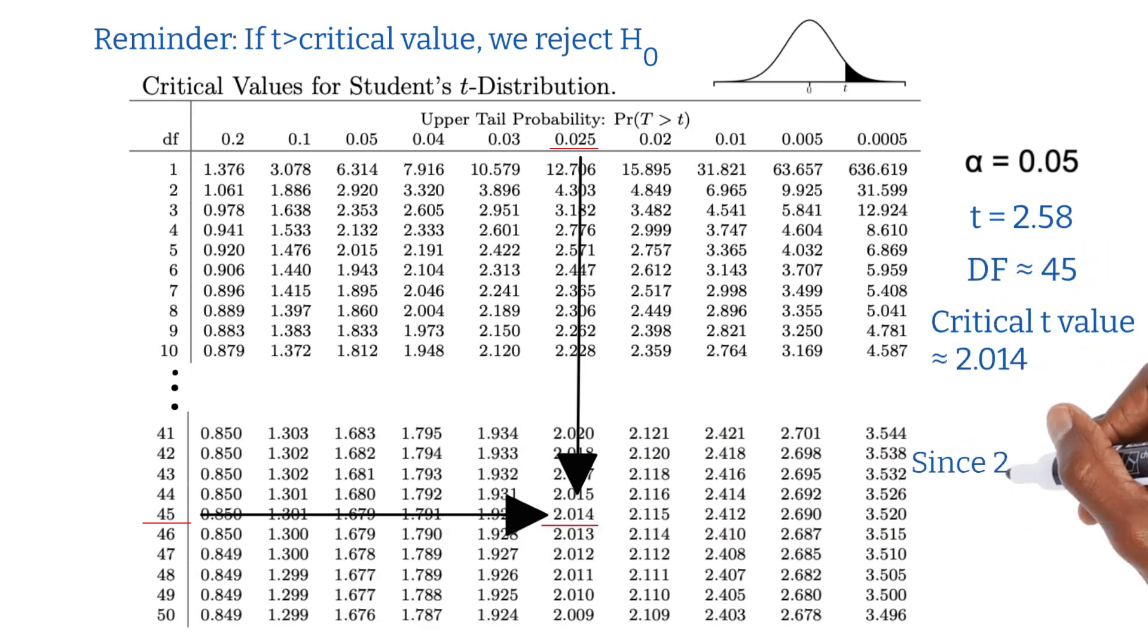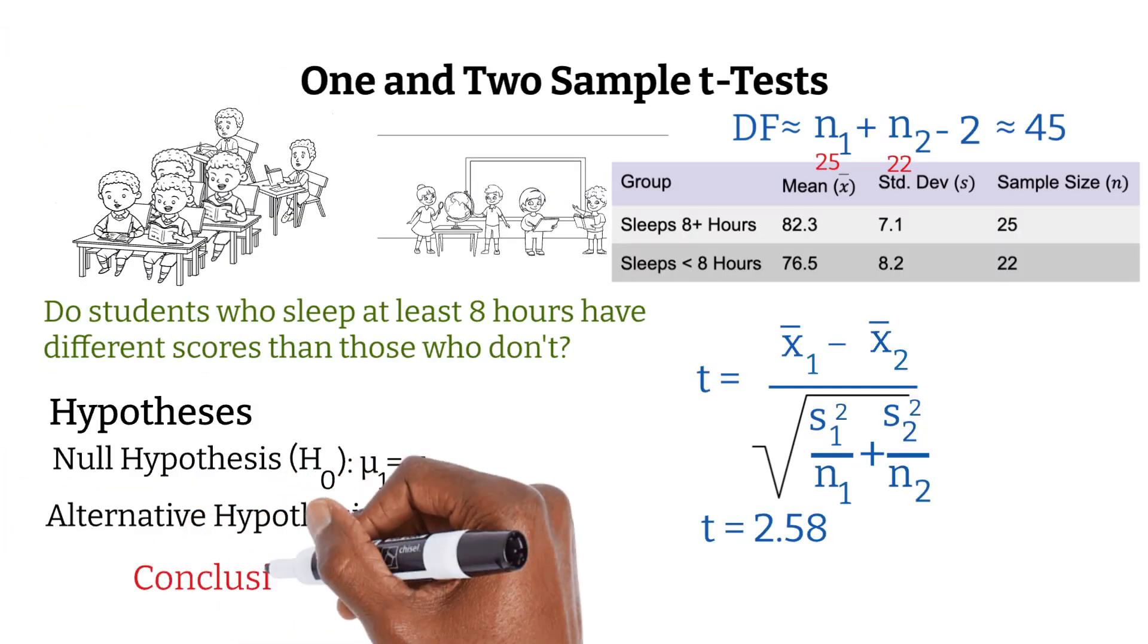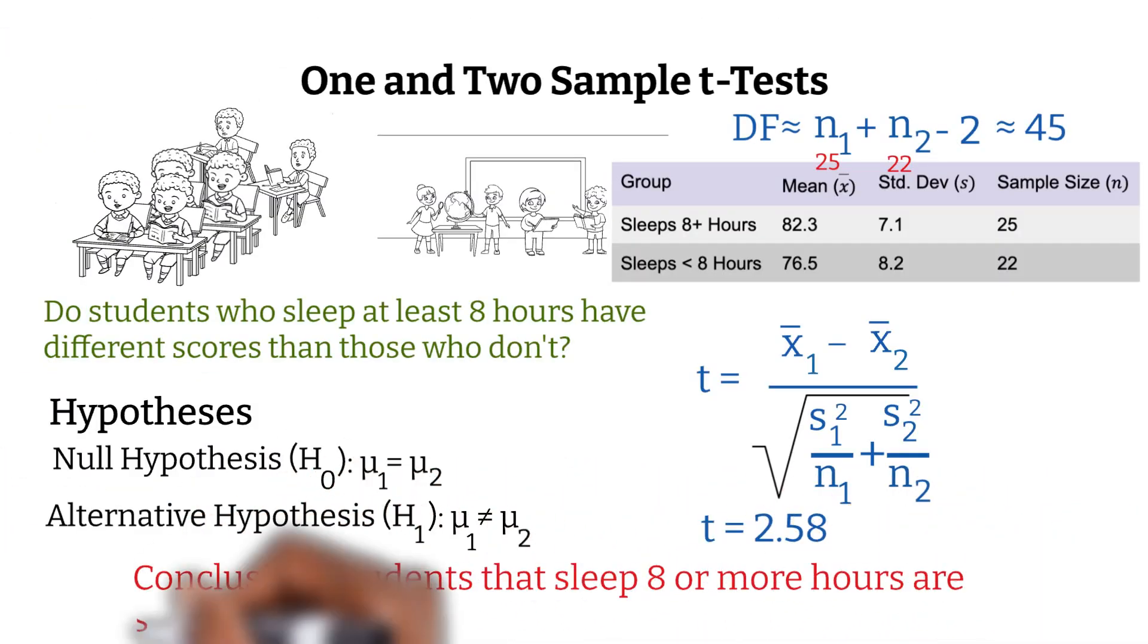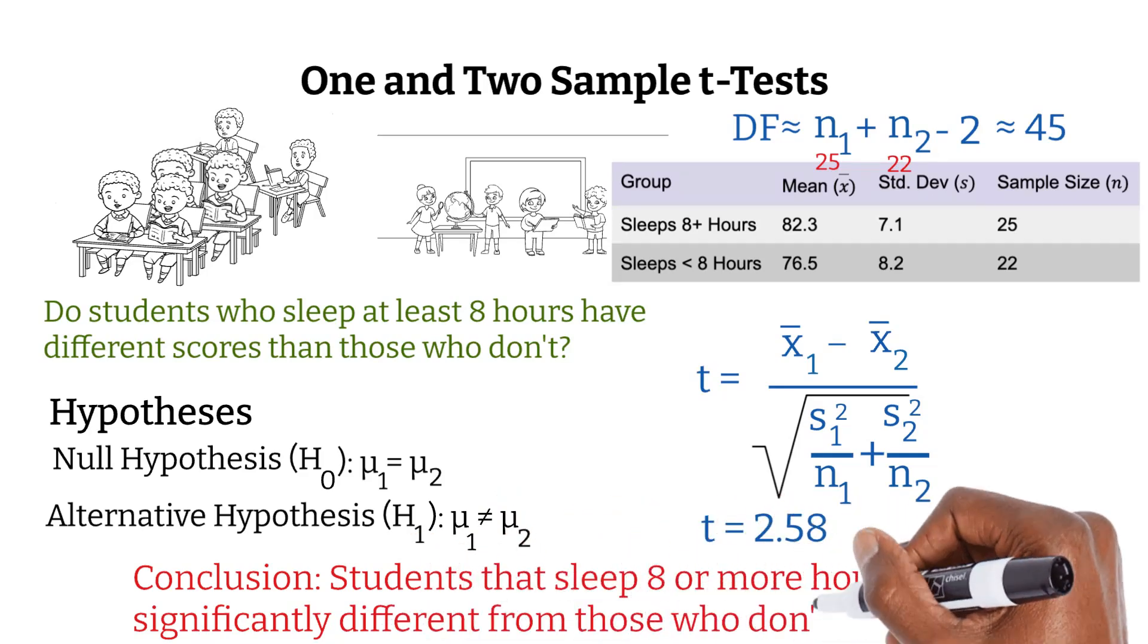Since 2.58 is greater than 2.014, we reject the null hypothesis once again, this time leading to the conclusion that students who sleep 8 or more hours are significantly different from those who don't.